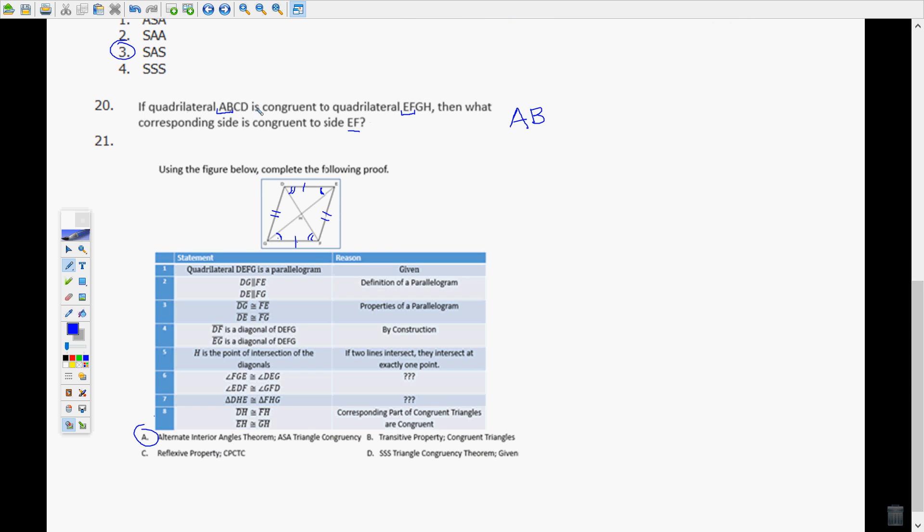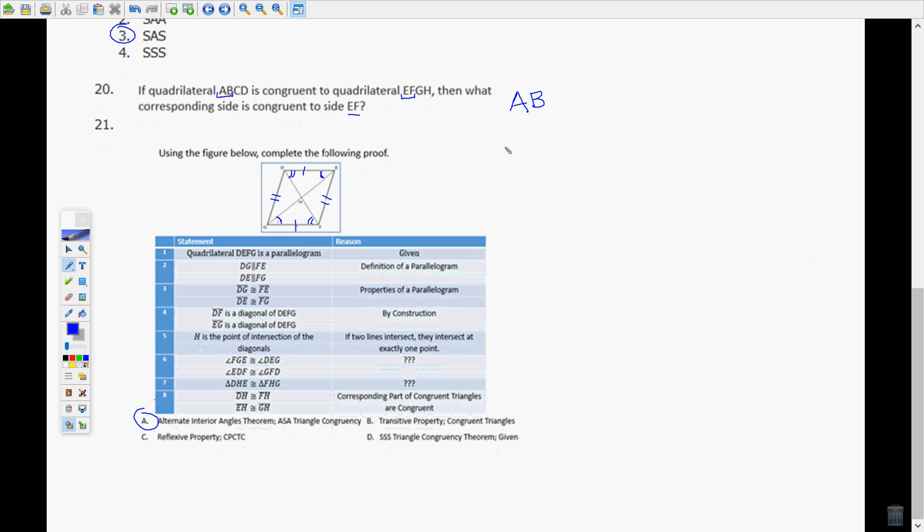If quadrilateral ABCD is congruent to quadrilateral EFGH, then what corresponding side is congruent to side EF? Remember your correspondence can be determined by the order that the letters are written, ABCD, EFGH. AB corresponds with EF. They're both the first two letters in the set of letters, so corresponding with EF would be AB. It's always that case, you don't have to see the picture, you can look at the letters.